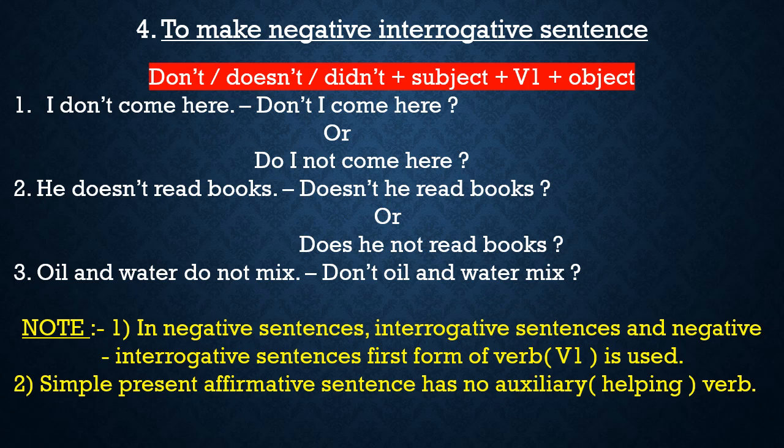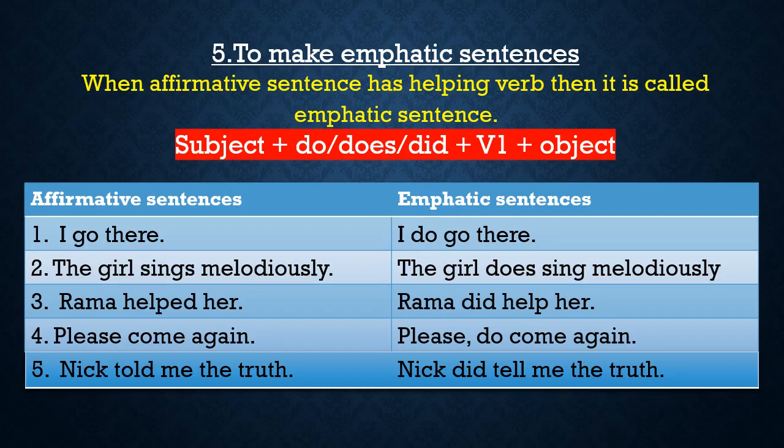Note points: First, in negative, interrogative, and negative interrogative sentences, first form of verb is used — students must note this. Second, a simple present affirmative sentence has no helping verb or auxiliary verb. Do, does, did is also used to form emphatic sentences — to emphasize or give importance to a statement. Kissi bhi baat ko zor dekar kehna ya importance dekar kehna hai toh do, does, did ka use karte hain.